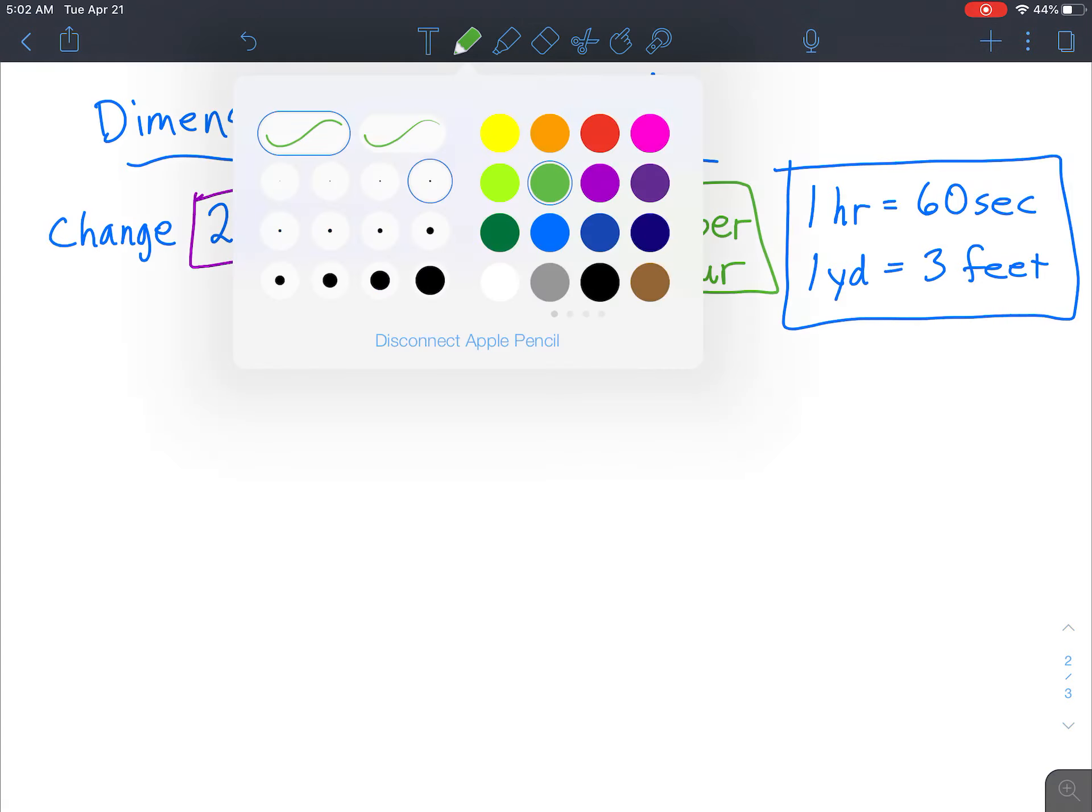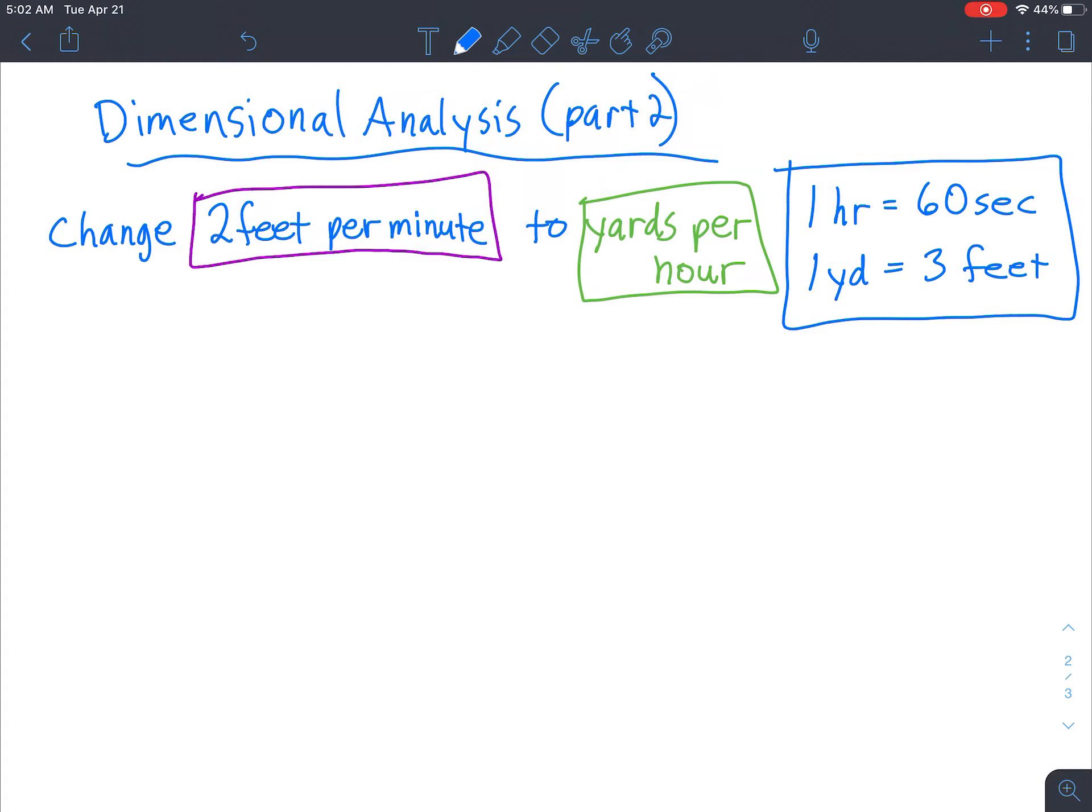Okay, so we're going to start off with what we have right here. You put that on top, so two feet per means you can make it a fraction like that. Two feet for every minute. And just remember, when you see minute by itself, it means one minute. And we want to change it to yards per hour, so that means these feet need to go to yards. So let's look at what we have. One yard equals three feet.